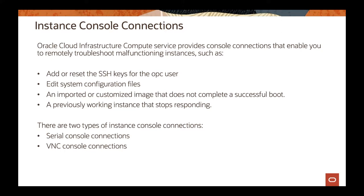So we actually have the instance console connection, which gives you the possibility of connecting to the instance through a serial console. It's a serial console that you connect through to gain access to the boot process, and be able to do some operations inside of the instance — even if you don't have the network configured correctly, or if you don't have network access to the instance. You can use instance console connections to fix boot problems and troubleshoot issues.